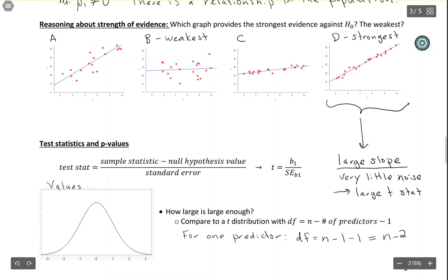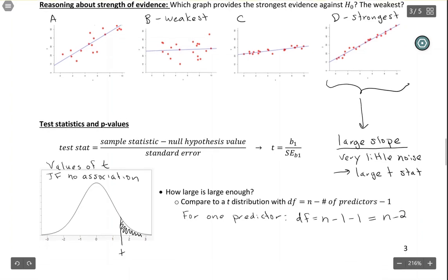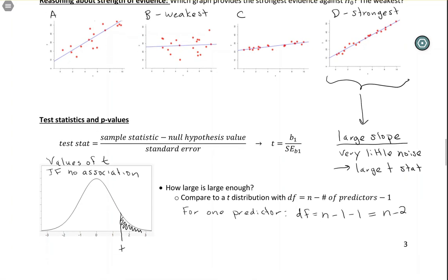This represents the values of t you would get if the null hypothesis were true—if there were really no association. You use this t-distribution the same way you've learned in previous units. You find your t-statistic and shade the values that are more extreme. If we're talking about a two-sided test, which we usually are, you also look on the other side and shade there. That's the general idea of a t-test for the slope, but we'll get to more details in a later video.